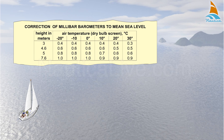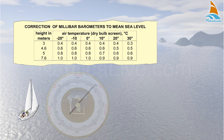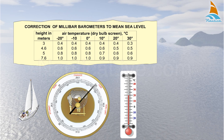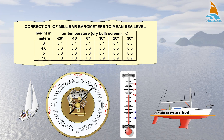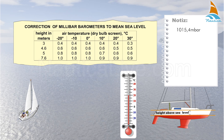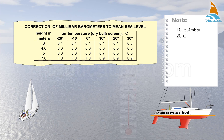Let's look at how to apply the correction. First, note your barometer reading, the air temperature, and your actual height above sea level. Let's assume that the barometer reading is 1015.4 millibars, the air temperature is 20 degrees Celsius, and your height above sea level is 5 metres.